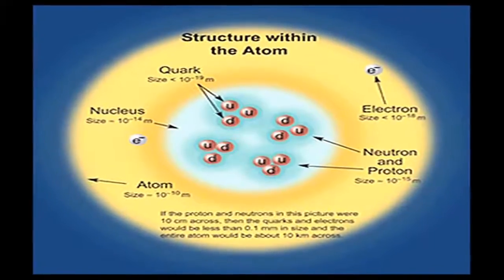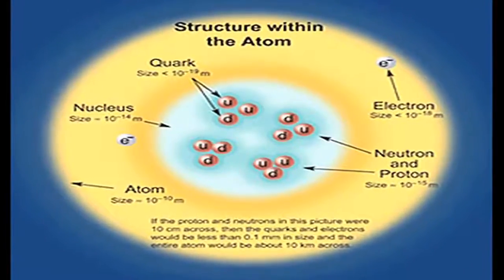Our understanding of the universe right now is a journey which we call inward bound. It's a journey in which we go looking at the laws of nature by probing nature at shorter and shorter distances. The journey started with the structure of the atom — Rutherford discovered the atom is made up of a central nucleus and electrons. We now know the nucleus is made up of protons and neutrons, which in turn are made up of quarks and gluons.